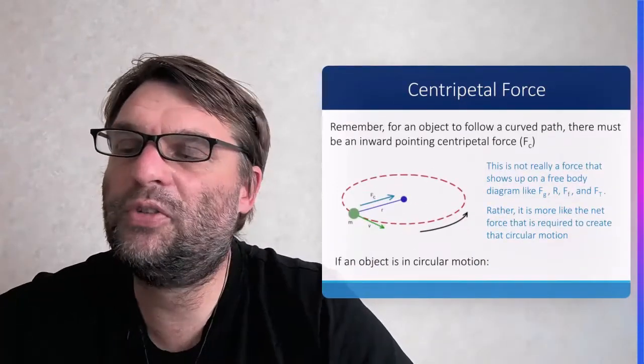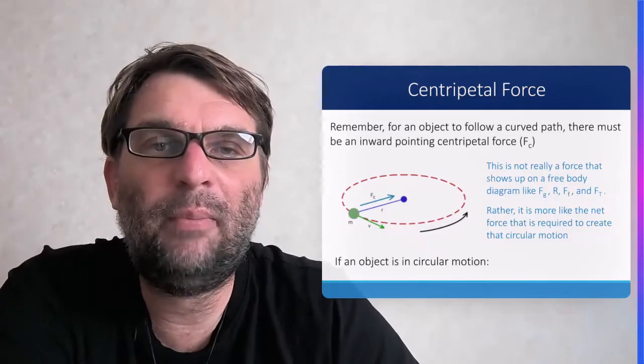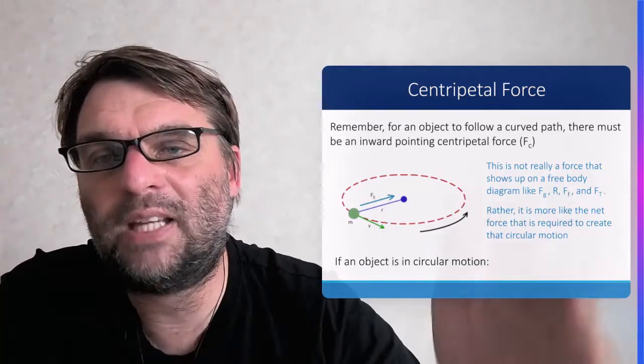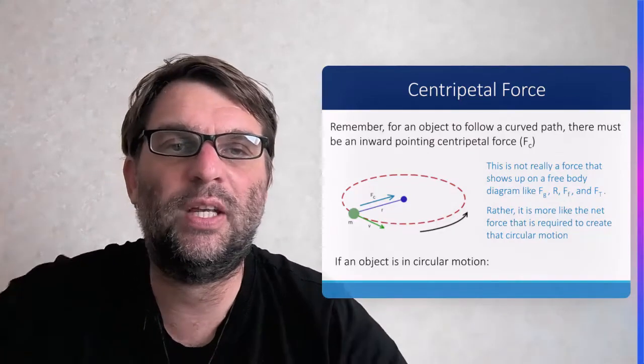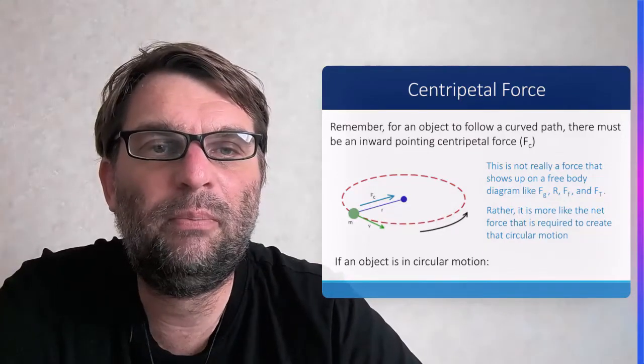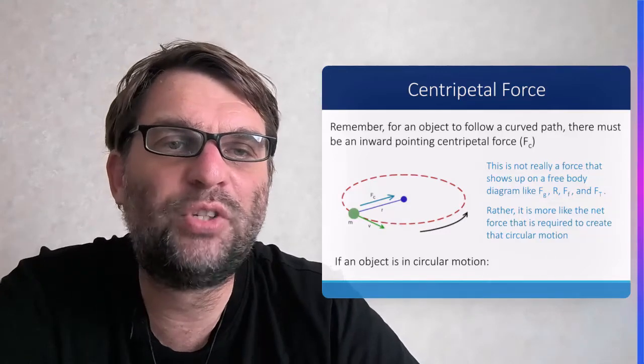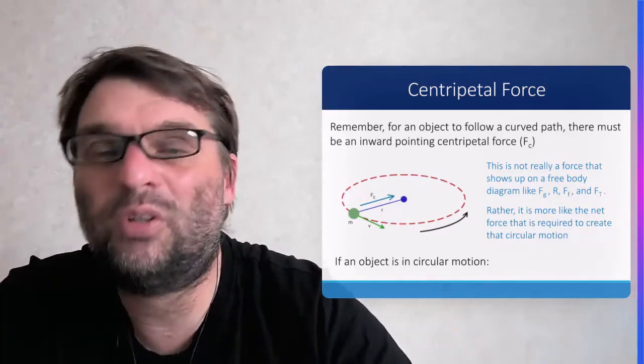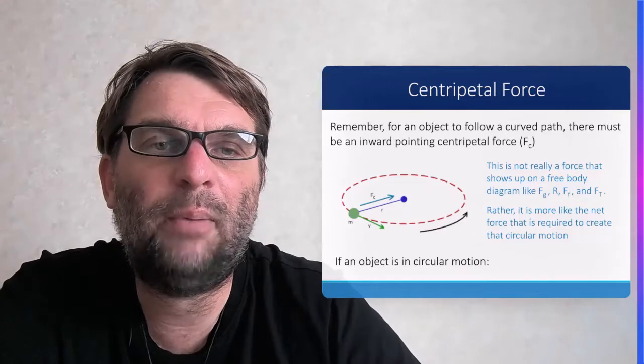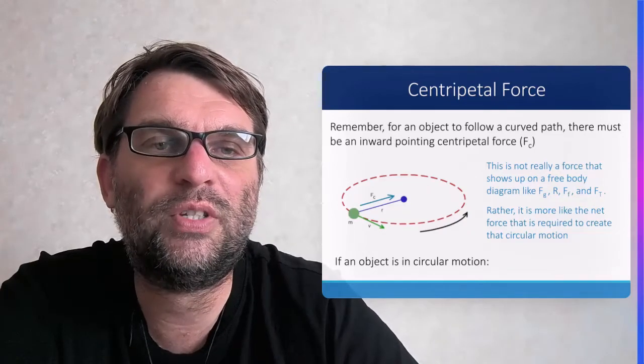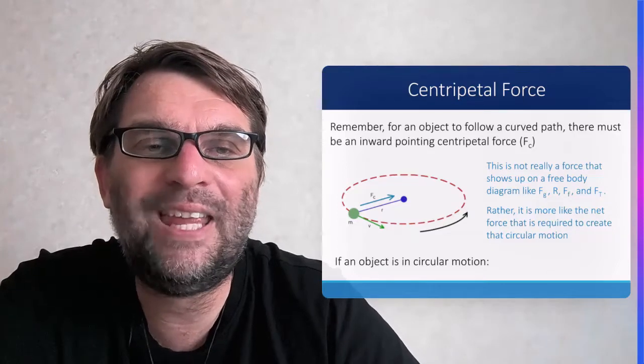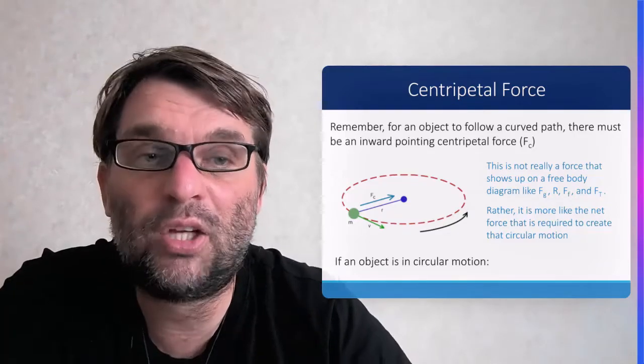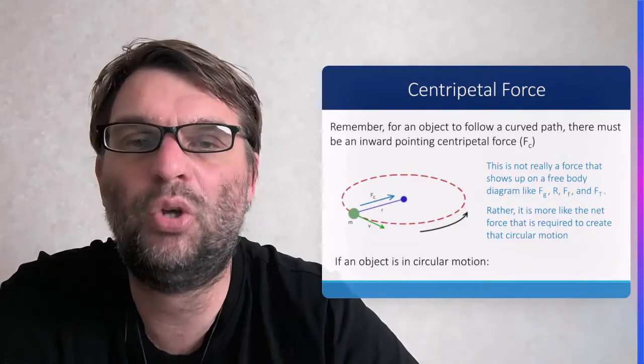For an object to follow a curved path, there has to be a force pulling it towards the center. It's not a force that shows up in a free body diagram like gravity, resistance, friction, or tension, but rather a net force required to allow circular motion to occur.